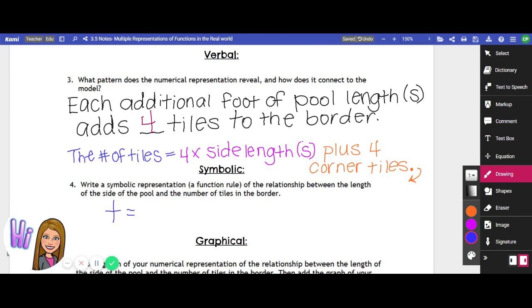And we could say T is equal to four times the side length, so we could just call that 4S plus the four corner pieces, so plus four. And that would be our symbolic representation, our mathematical function, our formula, our algorithm, however you like to say it, where T is number of tiles and S is equal to side length.